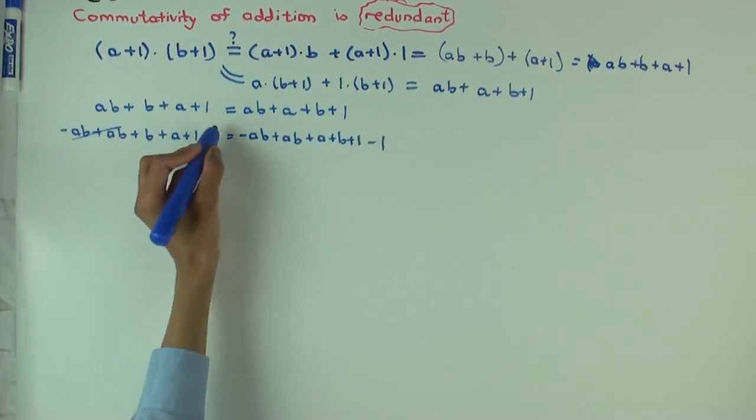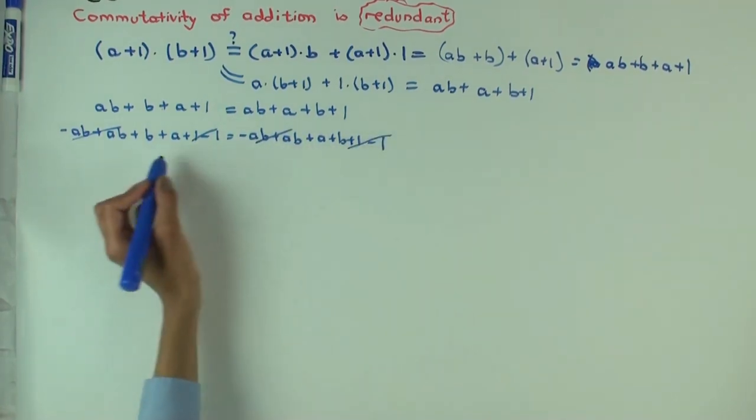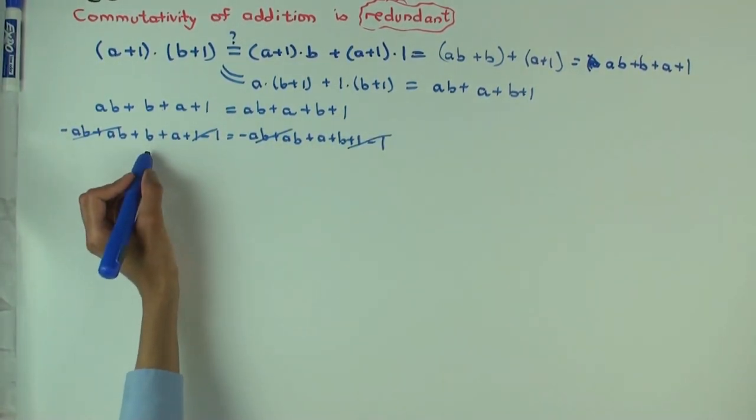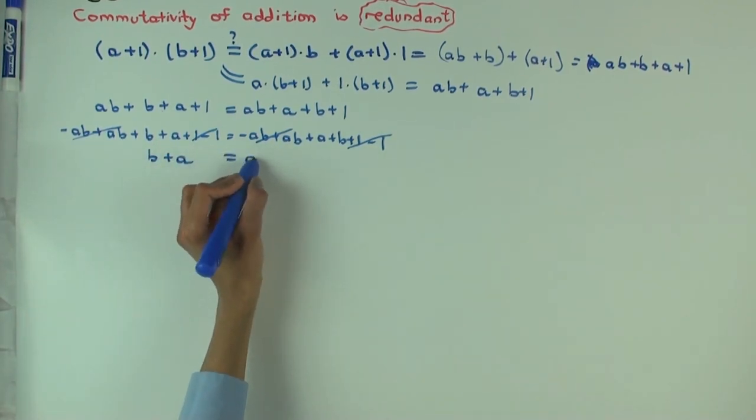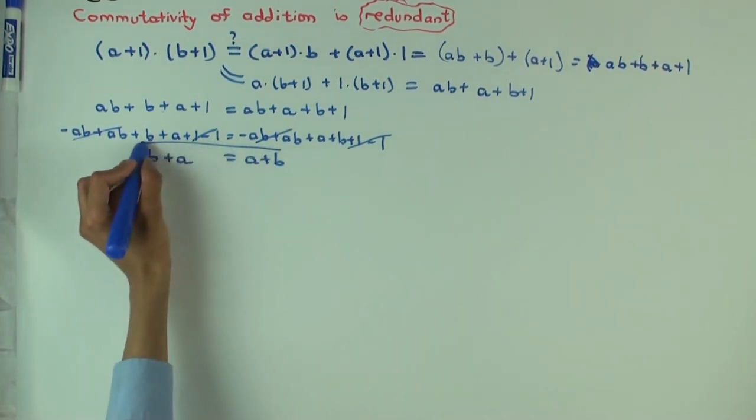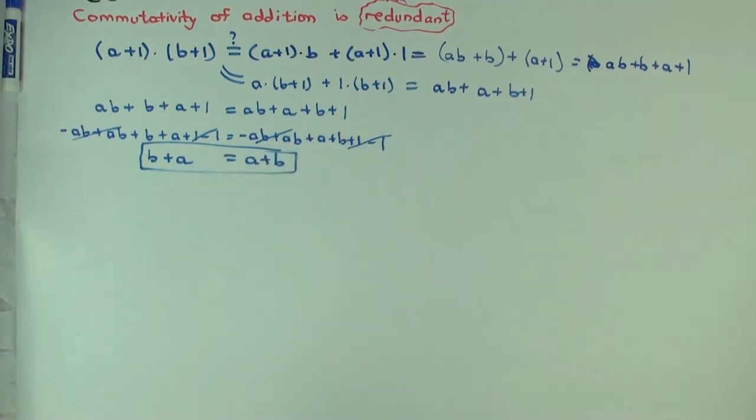And similarly, I can cancel the one on the right by adding minus one on the right to both sides. Okay. And these are zeros. So what do you get? You get what? B plus A equals to A plus B. Awesome. So that tells you that addition is commutative.